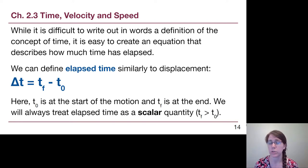Elapsed time has a definition that's very similar to displacement. Delta T means the change in time is equal to the final time minus the initial time. Here, t₀ is at the start of the motion and tf is at the end. We will always treat elapsed time as a scalar quantity (tf > t₀). Now, until we invent time travel, the final time is always going to be a bigger number than the initial time. So although this definition looks really similar to displacement, time is a scalar quantity. Once somebody invents time travel, I promise I will come back and update these slides and these videos, but I think we're pretty safe for now.